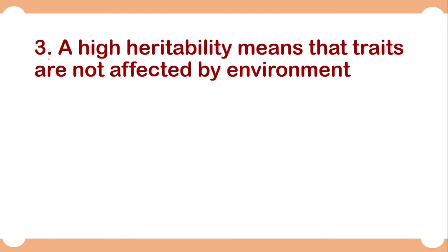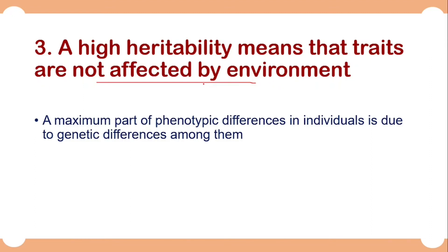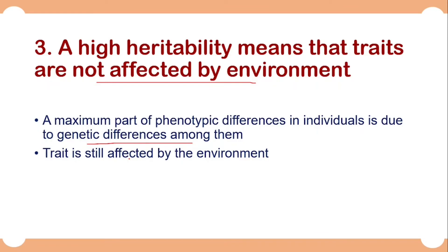The third misconception is that a high heritability means that traits are not affected by the environment. Heritability ranges between 0 and 1. If heritability is high it means that genetic differences are larger, but it does not mean the trait is unaffected by environment. It means that the major part of phenotypic differences among individuals is due to genetic differences. Environment is still affecting the trait, but the major part of phenotypic variance is due to genotypic differences.